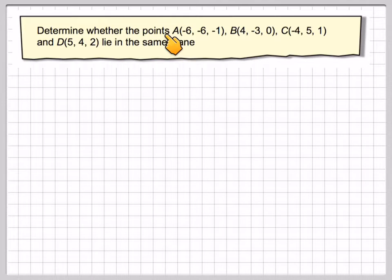Determine whether the four points A(-6, -6, -1), B(4, -3, 0), C(-4, 5, 1), and D(5, 4, 2) lie in the same plane.